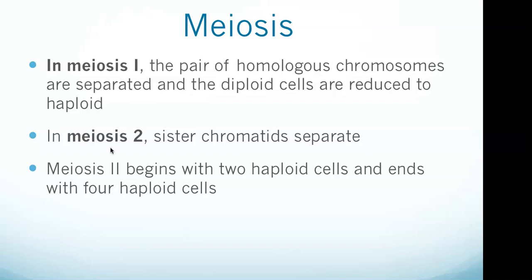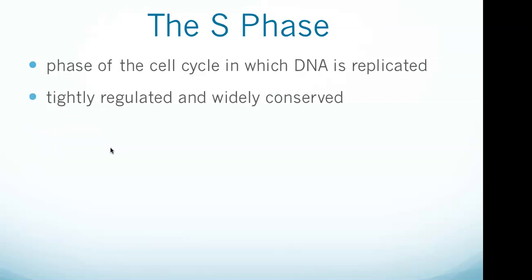The four meocytes produced are genetically different from one another. In humans, who have 23 pairs of chromosomes, the number of chromosomes remains unchanged from the beginning until the end of meiosis two. The S phase is the phase of the cell cycle in which DNA is replicated. Since accurate duplication of the genome is critical to successful cell division, the processes that occur during S phase are tightly regulated and widely conserved.